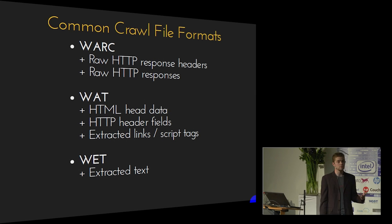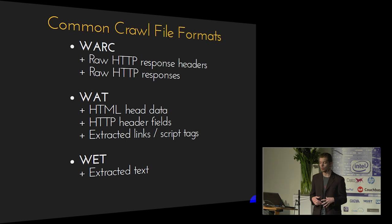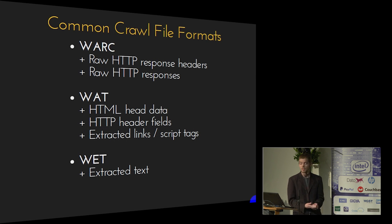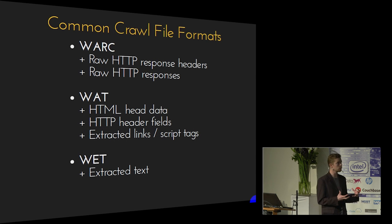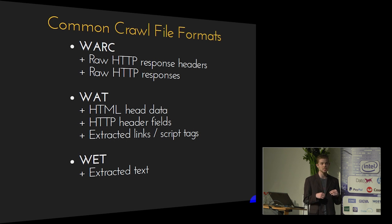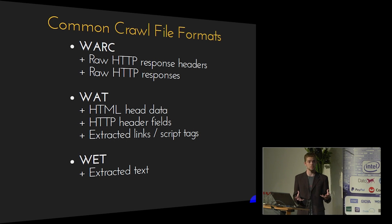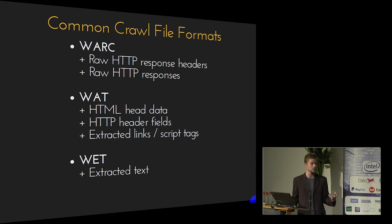We provide three different file formats. The first is WARC — the raw HTTP response headers and raw page content. The second is WET, a JSON-encoded file where we extract the most important metadata from HTML pages, including head data, the page title, HTTP headers, and all links with their attributes. Finally, for natural language processing, we provide extracted text files — purely the text pulled from each of those 1.9 billion web pages.